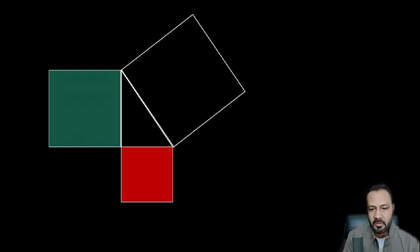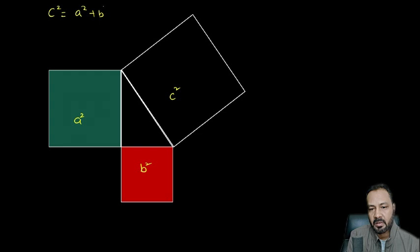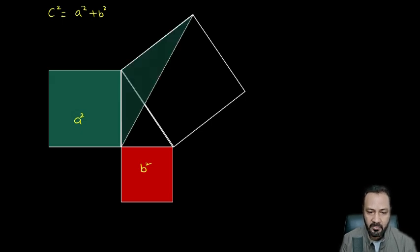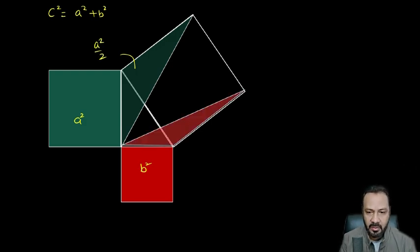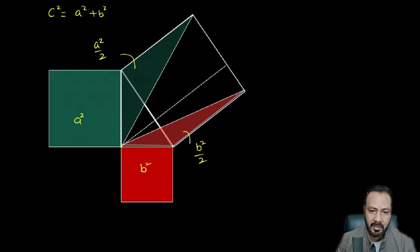So to recap: this side was of length a and this side was of length b. The area of the square on side a is a², the area of the square on side b is b², and the area of the square on side c is c². I need to prove c² = a² + b². We just established that one triangle's area is a²/2 and another triangle's area is b²/2. Now I want to make one more construction.